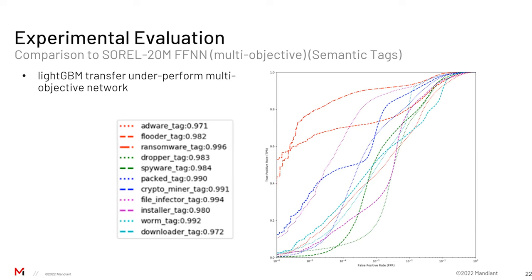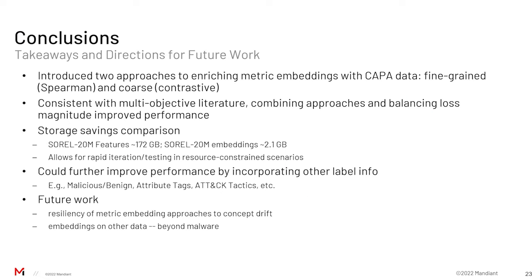So what can we glean from this work? We've introduced a fine-grained approach to metric embedding via the Spearman rank loss, as well as a coarse-grained approach using CAPA clusters and contrastive loss. Consistent with much of the literature on multi-objective optimization for malware, combining approaches and balancing loss magnitudes does improve performance. It's always good to see consistency with prior work.